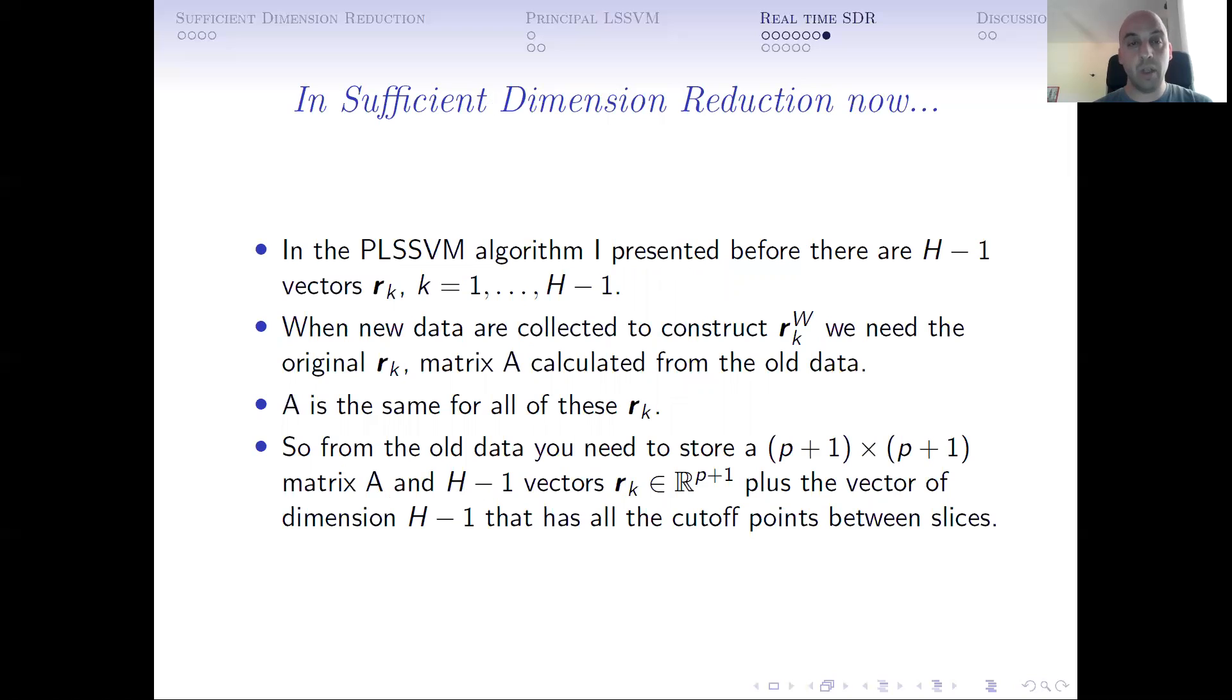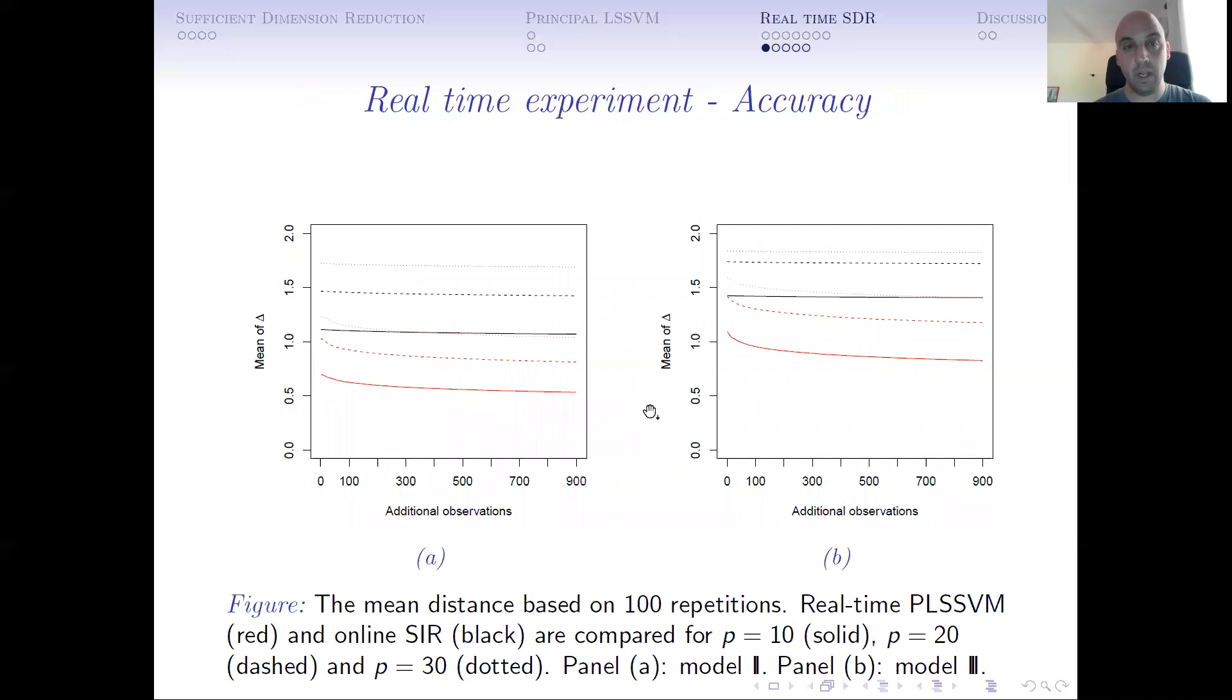We can do that in sufficient dimensional reduction. If we have h slices, you have to do this h minus one times. The good thing is that on all different hyperplanes that you estimate, the matrix A is the same, so you don't have to calculate it every time. As long as you know matrix A, you can update the new estimates of the normal vectors of the separated hyperplanes.